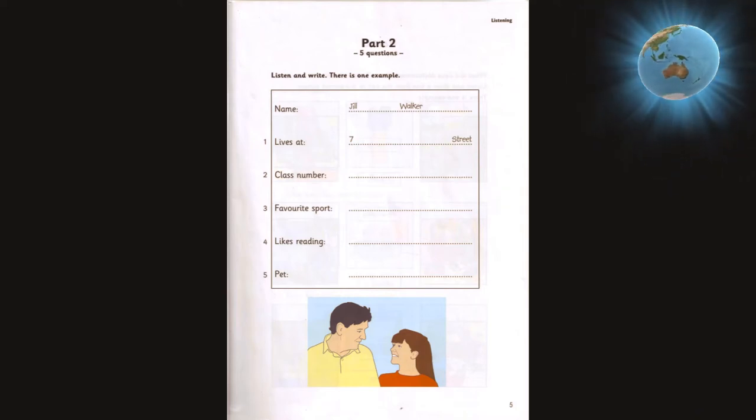Hello, Jill. Can I ask you some questions? OK. What's your family name? My family name's Walker. Jill Walker. Can you spell that? W-A-L-K-E-R. Thank you.